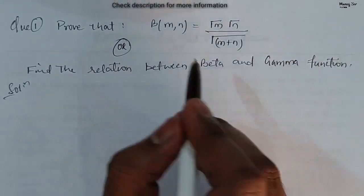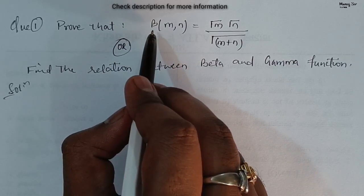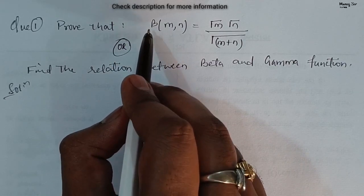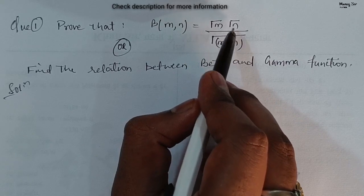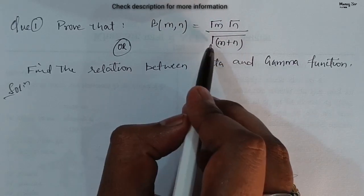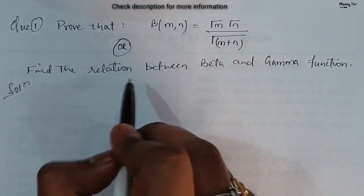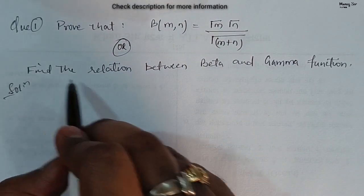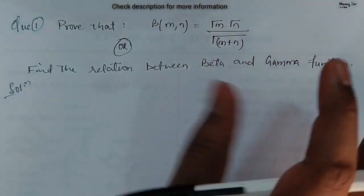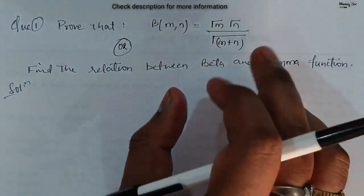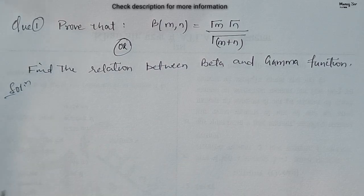You can get the problem in this form: prove that beta of m comma n equals to gamma m times gamma n upon gamma of m plus n. Or you can get a question like this: find the relation between beta and gamma function. Let us start.